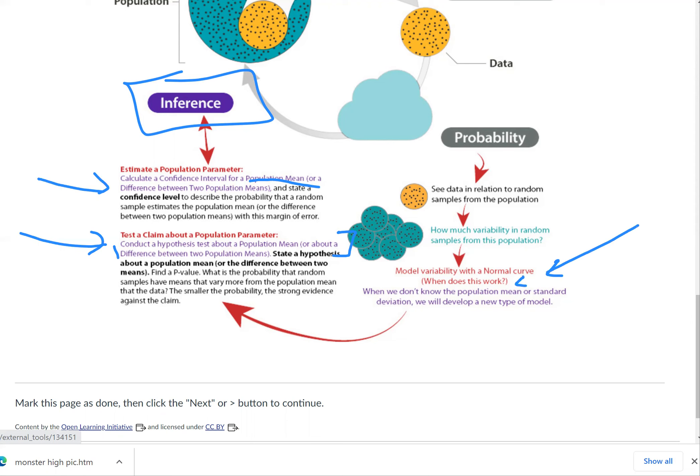We'll try to remember and remind ourselves: when does this work? When we don't know the population mean or the standard deviation, we'll develop a new type of model.